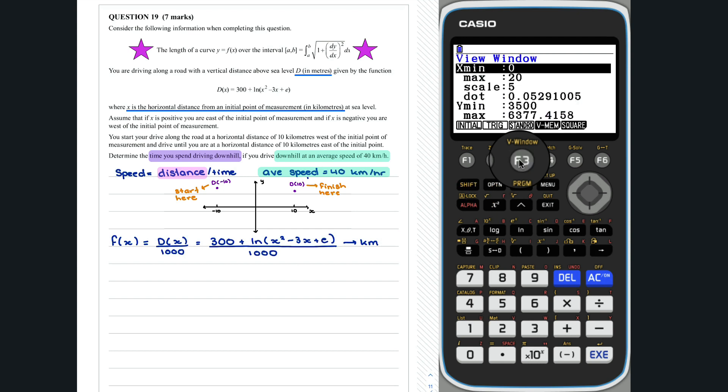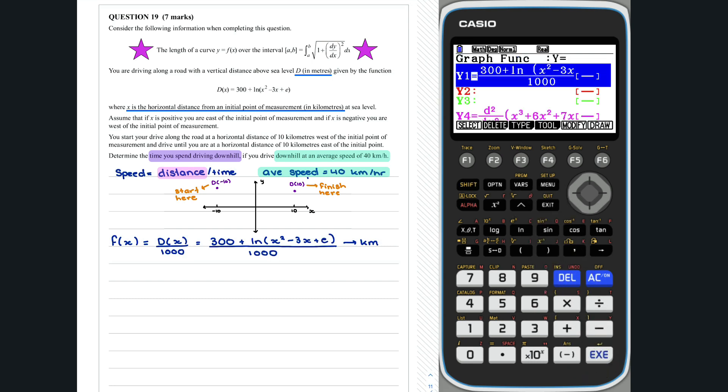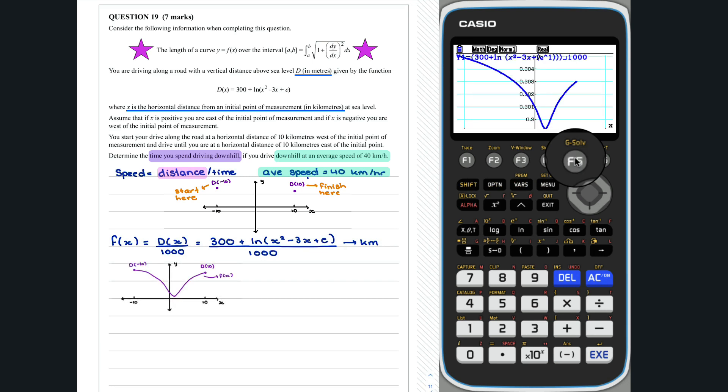We will set our view window to have an x min of negative 11 and an x max of 11. We will now use zoom auto to get a look at our graph. Zoom auto is found by pressing f2 and f5. So, it looks like we drive downhill from the start and at some point after x equals 0 start driving uphill.